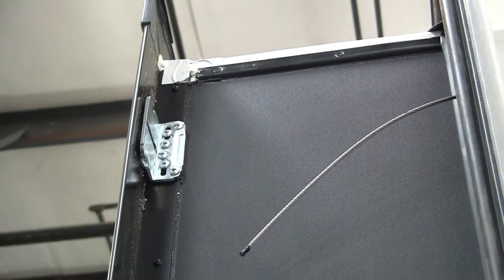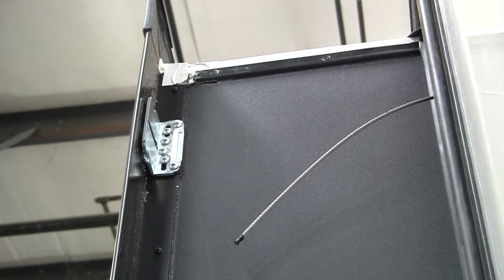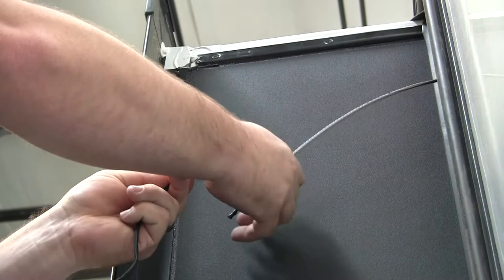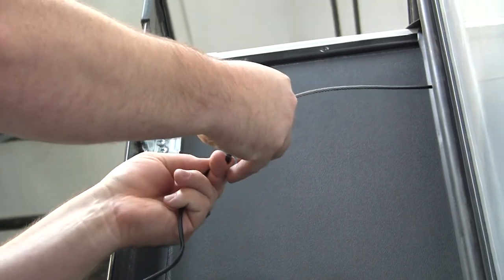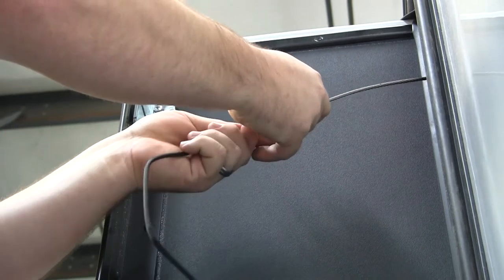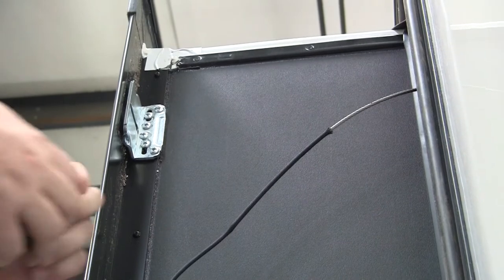From there we're going to pull from the kit the braided sleeve. We're going to slide this braided sleeve on the old cable as far as we can go and then we're going to tape the end of it onto the old cable.